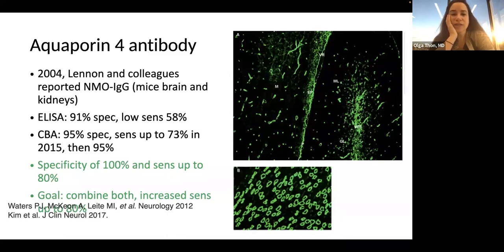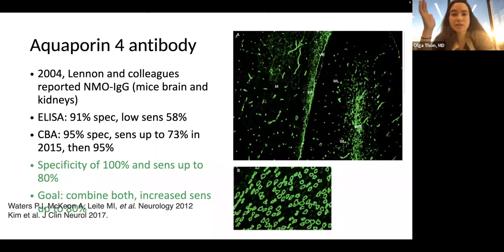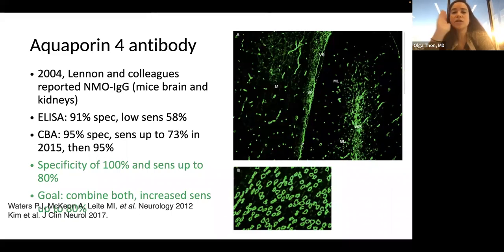That relates to the mechanism of disease — when those antibodies target those channels, the channels can no longer function perfectly. The cell loses a lot of water, goes into apoptosis, and you have cell death. Initially the antibody test wasn't great — high specificity but very low sensitivity using the ELISA method. By 2015 we had assays with high specificity of 95% but sensitivity around 73%. More recent cell-based assays further improve this, and when labs have a discrepant result, they combine immunofluorescence with cell-based assay.